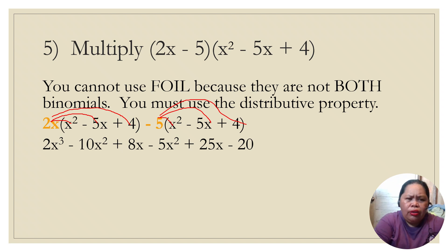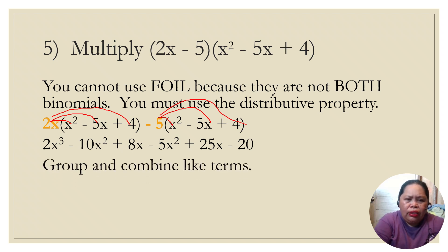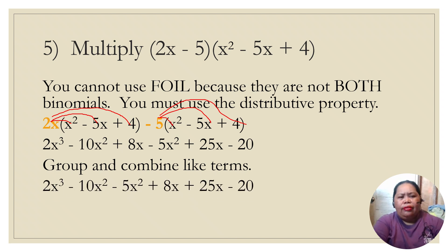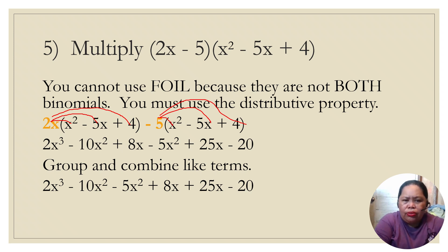Distributing: 2x cubed (since 2 + 1 = 3 for the exponent), then −10x squared, plus 8x. Then −5 times the trinomial gives −5x squared, negative times positive 4 is −20. Combining like terms: 2x cubed, then −10x squared plus (−5x squared) is −15x squared, and the final answer is 2x cubed − 15x squared + 33x − 20.